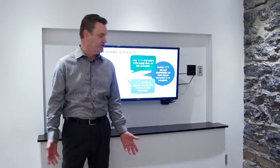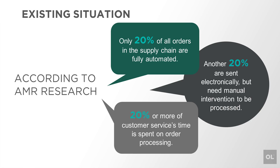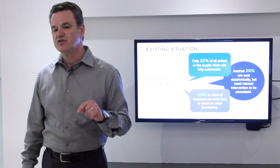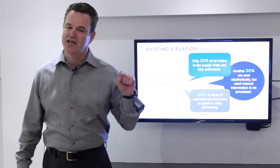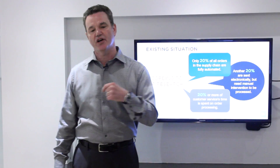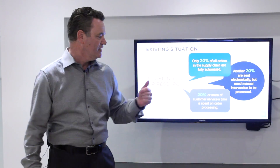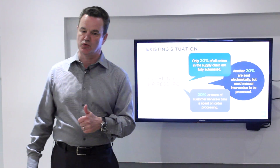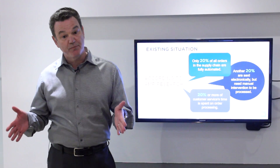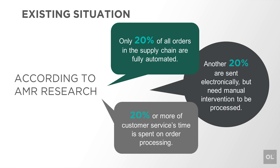Let's take a look at some industry statistics. AMR Research has determined that about 20% of inbound purchase orders are actually fully automated — those are electronic, coming in as EDI transactions. That means that 80% of purchase orders are some kind of paper document that has to be keyed manually. Of the balance, 20% come in as PDFs.